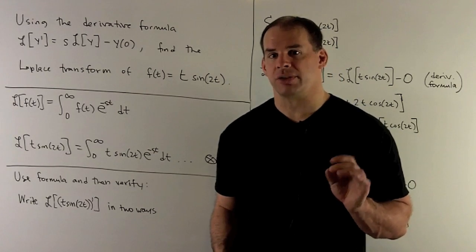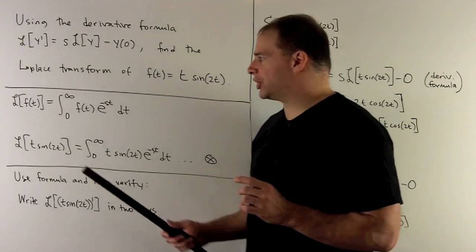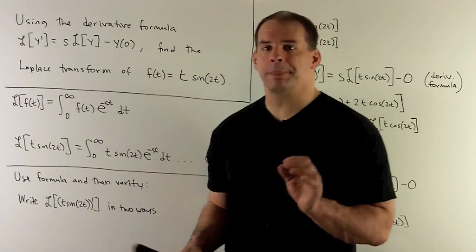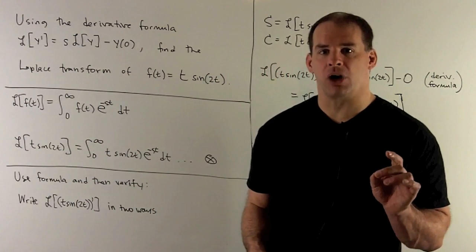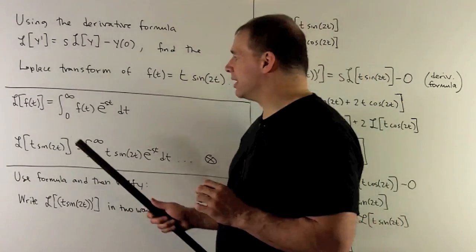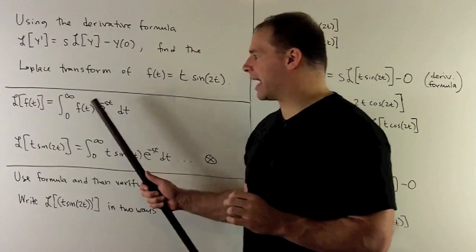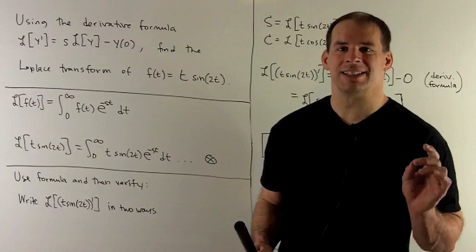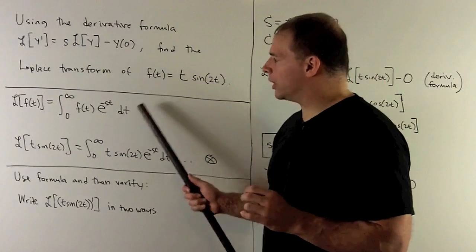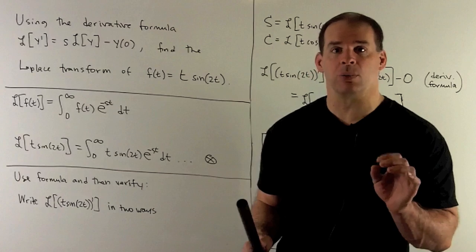Let's first recall the definition of the Laplace transform. If I have a function f(t) and I take its Laplace transform, what comes out is going to be another function in the variable s. We define this as the improper integral from zero to infinity of f(t)·e^(−st) dt. Since we're integrating with respect to t, we treat s as a constant when we integrate.